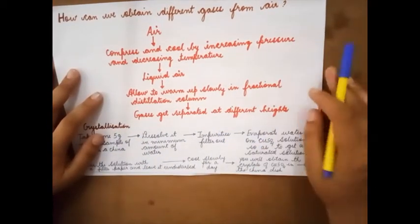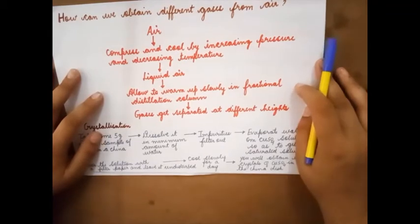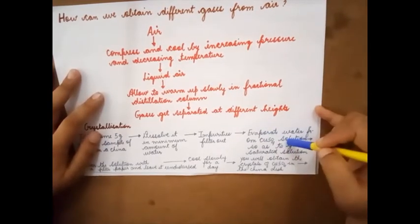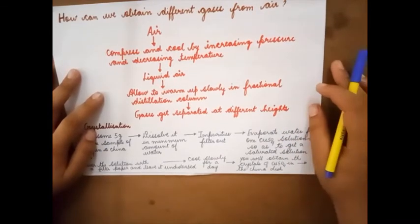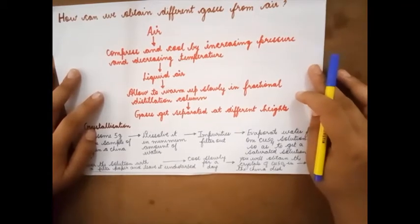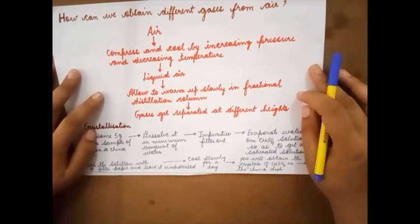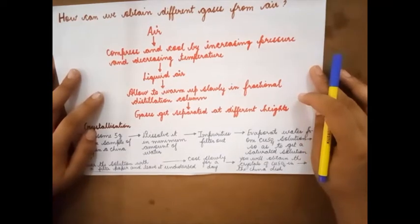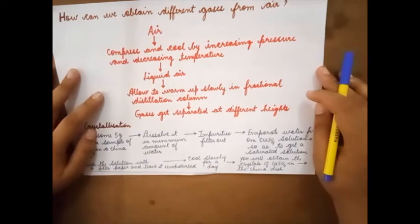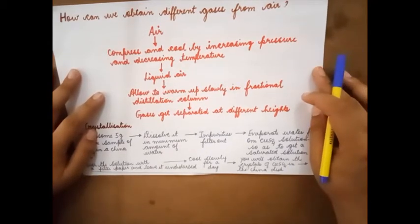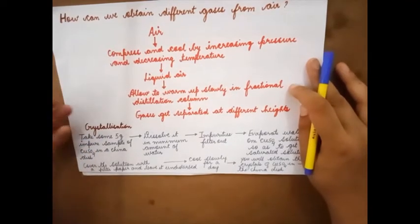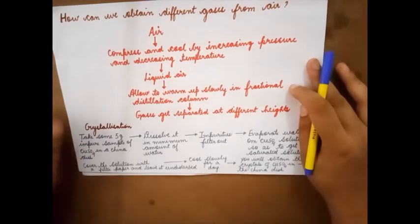The impurities are filtered out using filter paper. Then we evaporate the water from copper sulfate solution so as to get a saturated solution. When we evaporate the water we get saturated solution. Water is being lost. What is left is copper sulfate solution.